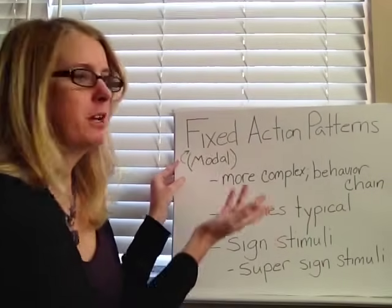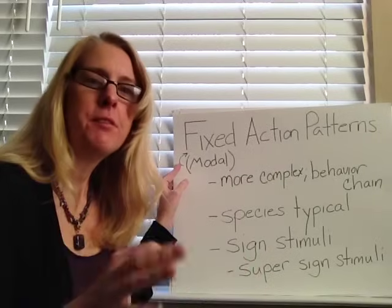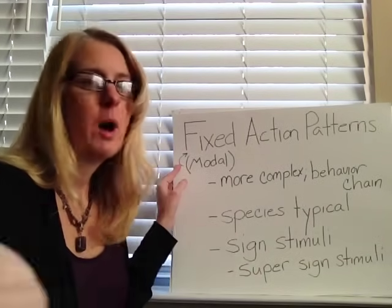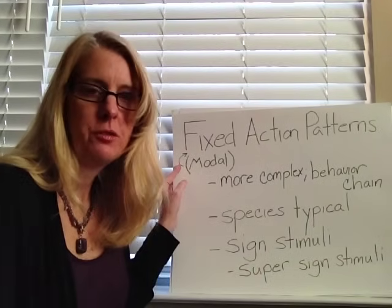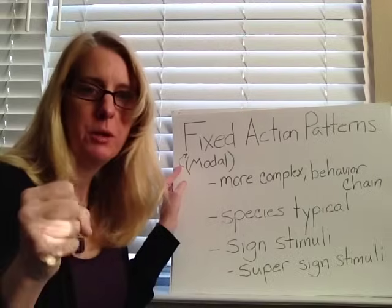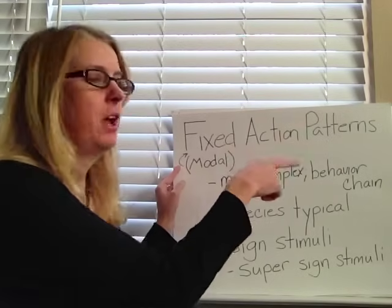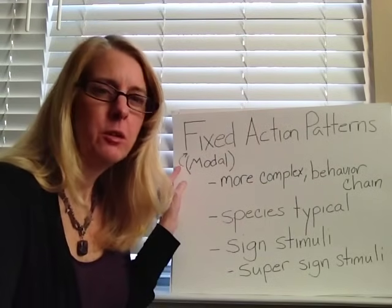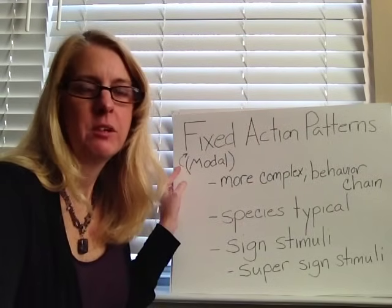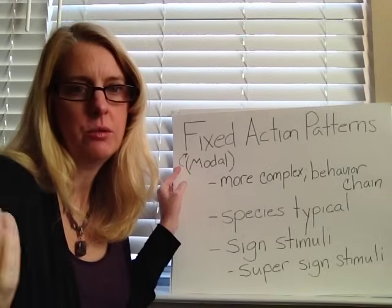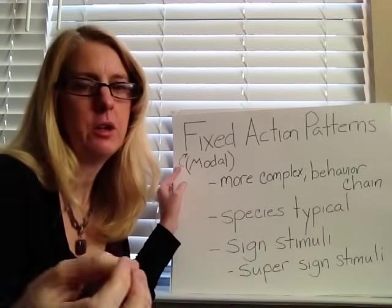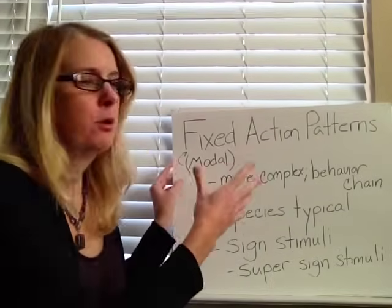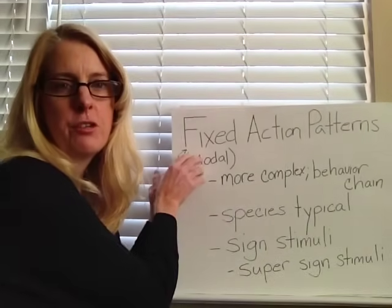So between a reflex and a fixed action pattern: reflexes are very simple and you'll see them in a wide variety of species, like pulling your hand back from something hot. Fixed action patterns are only performed by certain species — cats don't spin cocoons like spiders, dogs don't retrieve eggs — and they're more complex chains of behavior.